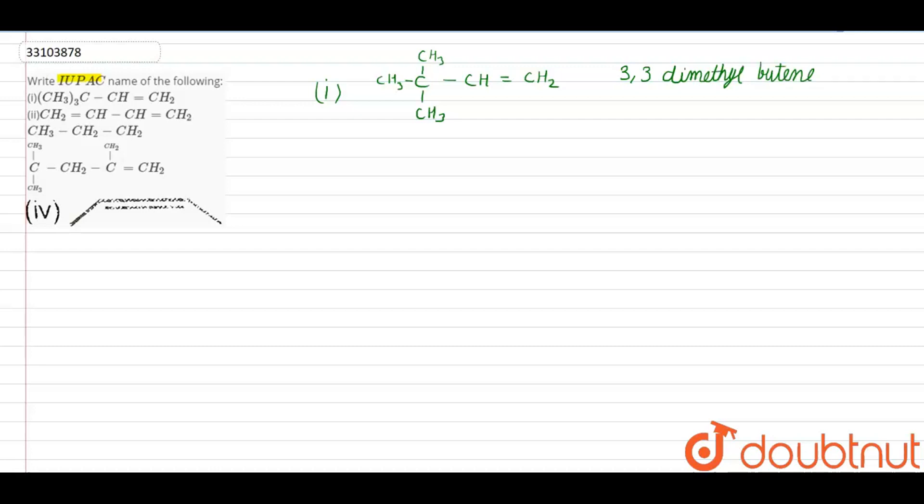Okay? Then the second one is, simple CH2, double bond CH, single bond CH, double bond CH2. The name of this compound is buta-1,3-diene.